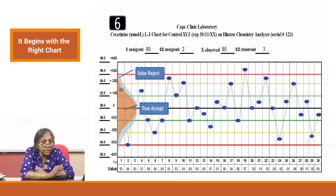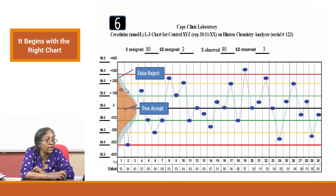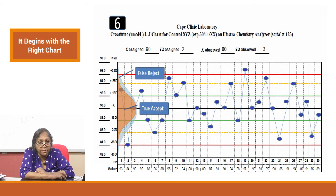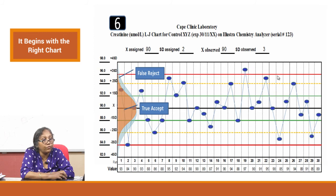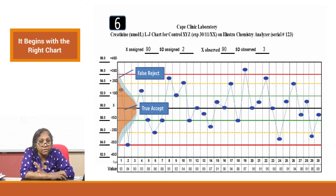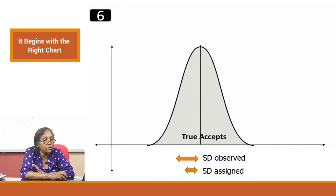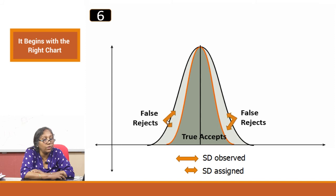Another case: mean is 90, assigned SD is 2, but your observed SD is larger than what you assigned. For no reason you will be rejecting runs. The true accept region is narrow and everything outside becomes a false reject because you assigned your SD too narrowly. You need to be sensible when assigning your SD — if assigned too narrowly, you are rejecting good runs that should have been within your 95 percent region.